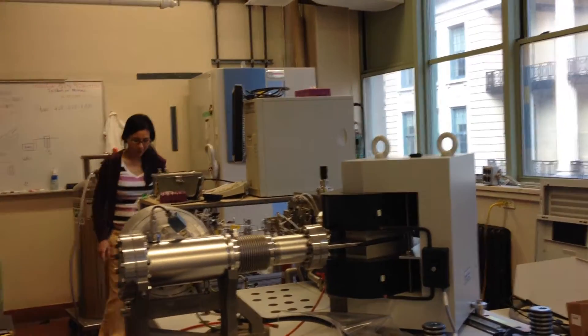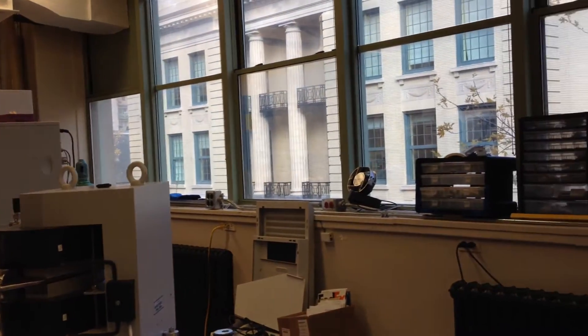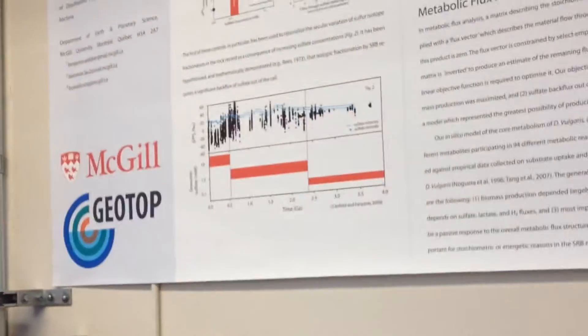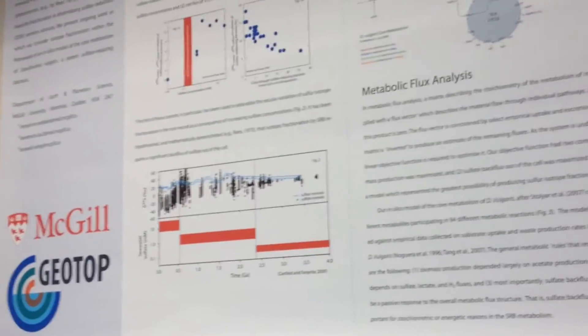And so what we have to do down there, because the mass difference is so small, is we have to go through a pretty involved procedure of purifying the element of interest, turning it into something that we can actually analyze on that mass spectrometer, and then doing the analyses on the mass spectrometer.